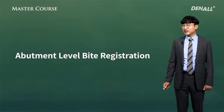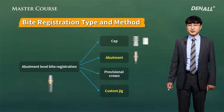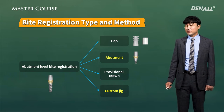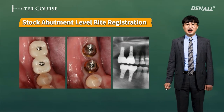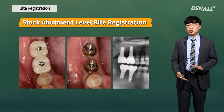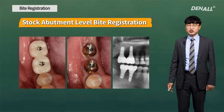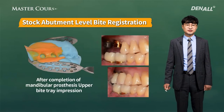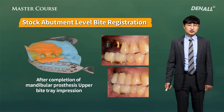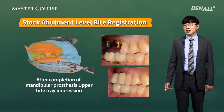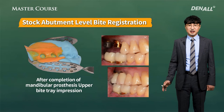Now let's look at abutment level bite registration. There are different types, but mostly I use the approach of connecting the abutment first, taking the bite, and using a custom jig. For upper and lower, if registration is done at the same time, it becomes very challenging with fixture-level bite registration. So I complete one side first, restore the opposite side with a temporary, and observe. If the patient is comfortable, abutment level impression is taken and the upper side is restored.